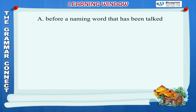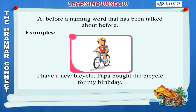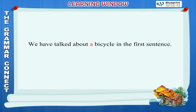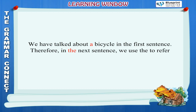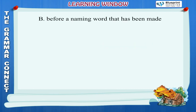Examples of 'an': An apple, an elephant, an inkpot, an orange, an uncle. Uses of 'the': (a) Before a naming word that has been talked about before. Example: I have a new bicycle. Papa bought the bicycle for my birthday. We have talked about a bicycle in the first sentence. Therefore, in the next sentence, we use 'the' to refer to the same bicycle.